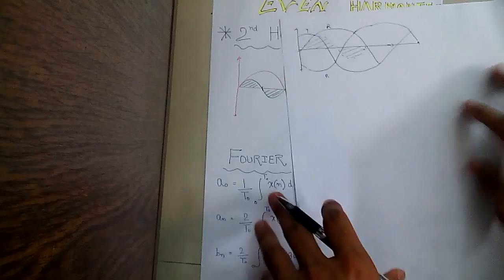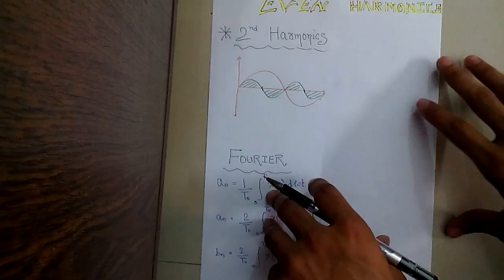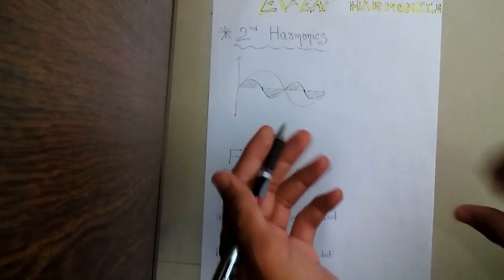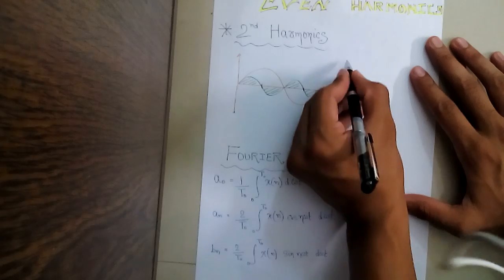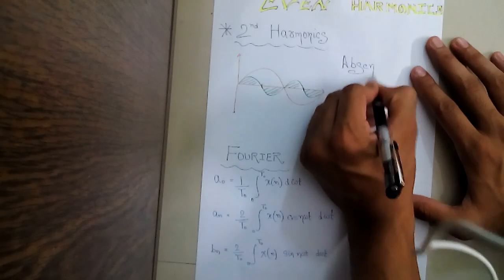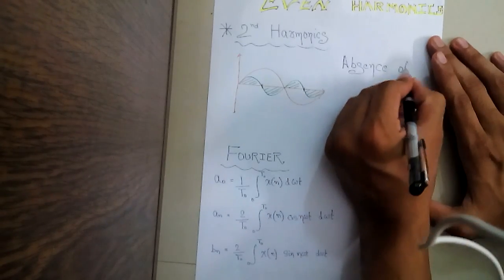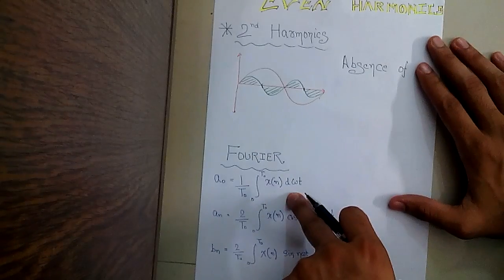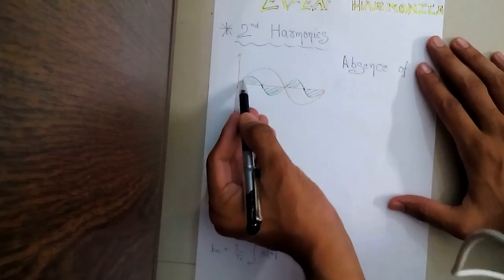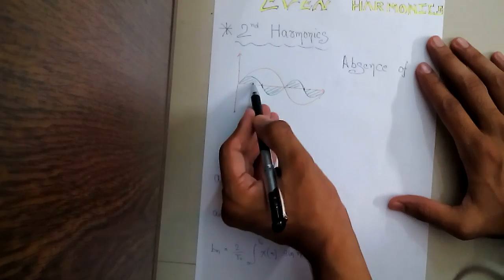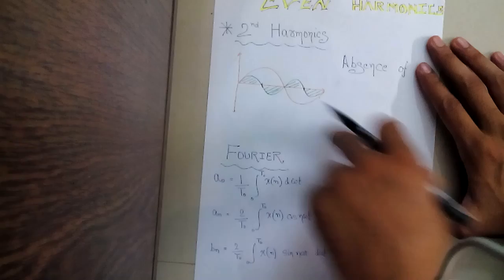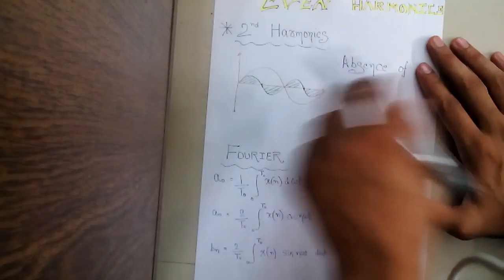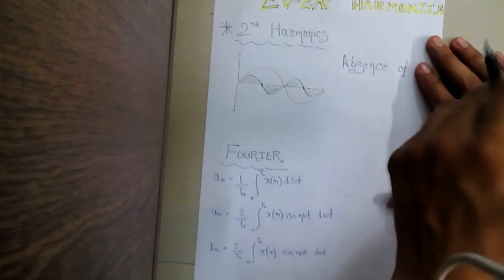Similarly for Y phase and similarly for B phase. So the first question that arises is: we always say that even harmonics are absent in a polyphase system. For the first explanation of the absence of even harmonics, you can see from the graph that the positive part will cut off the negative part. So these even harmonics will not appear ultimately in my return line.